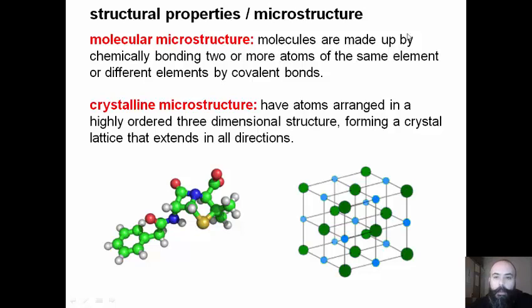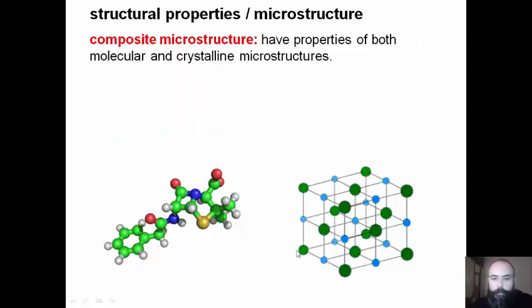Molecules are made up by chemically bonding two or more atoms of the same or different elements by covalent bonds. This microstructure can be crystalline, with atoms arranged in a highly ordered three-dimensional structure forming a crystal lattice that extends in all directions. Composite microstructure shows properties of both molecular and crystalline microstructures.